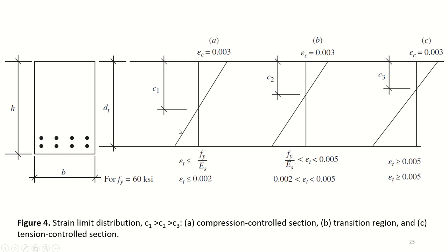This is a very interesting diagram. This is the cross section of the beam — you can see the width, the height, and the effective depth of the steel called dt. In all three cases, the strain in the extreme concrete fiber is 0.003. The question is: what is the condition of the steel on the tension side when concrete reaches this strain, since at this strain concrete is going to fail?